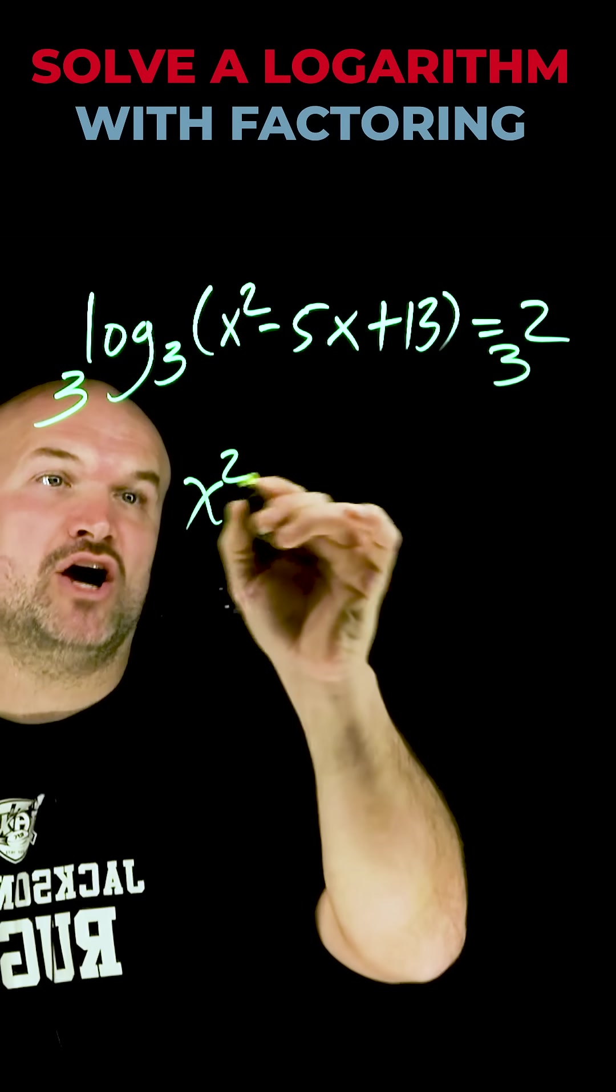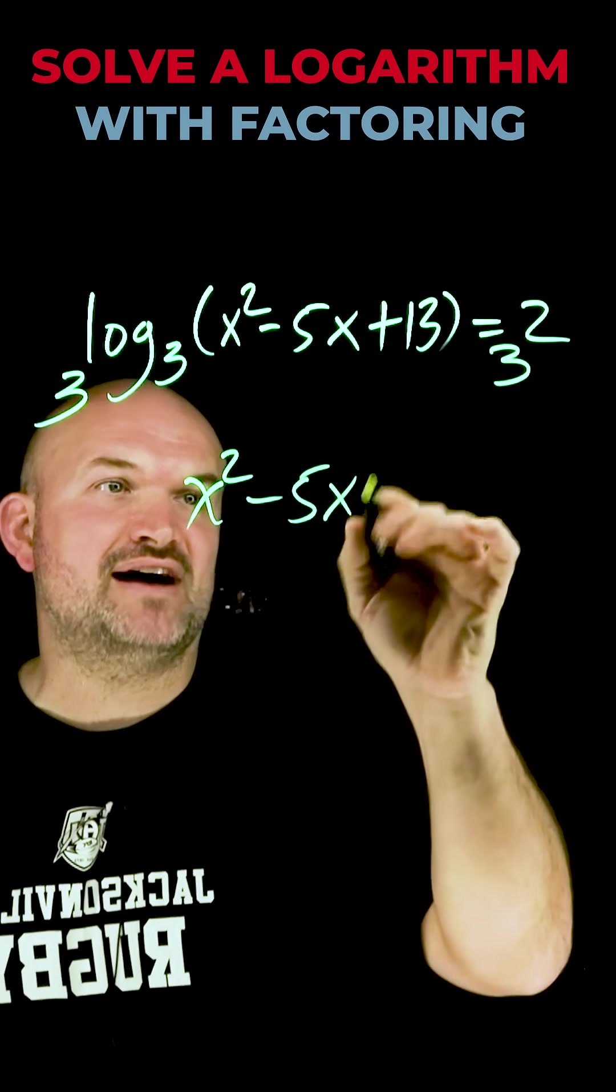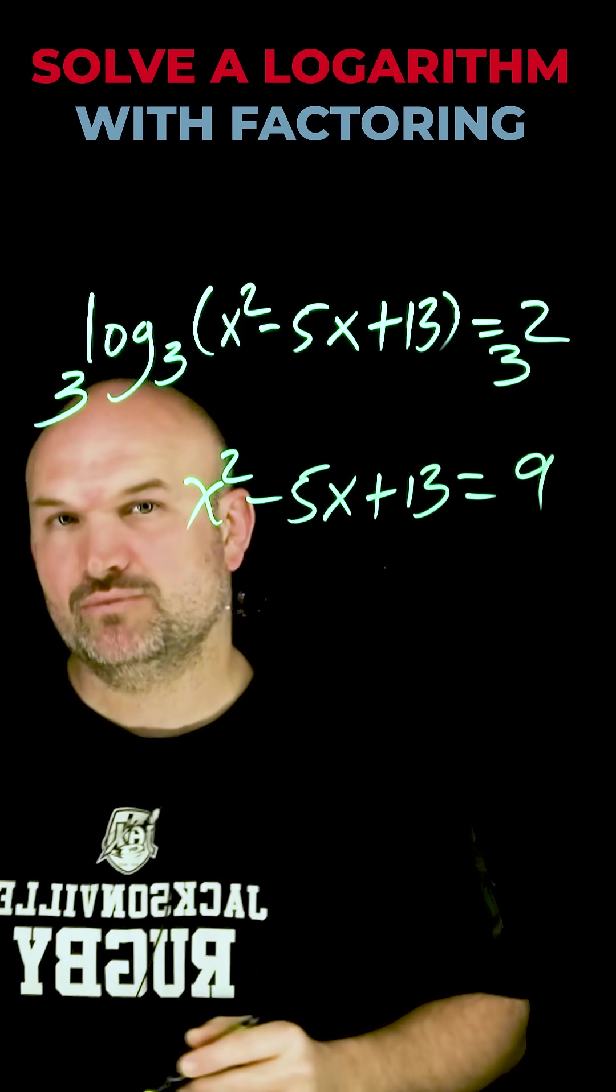Now, that's going to leave me with my argument, which is x squared minus 5x plus 13 is equal to 3 squared, which is 9.